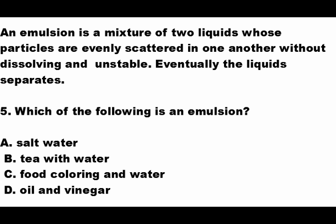Number five is about emulsion. An emulsion is a mixture of two liquids whose particles are evenly scattered in one another without dissolving. It is unstable, and eventually the liquids will separate. Which of the following is an emulsion? Is it A) salt water, B) tea with water, C) food coloring and water, or D) oil and vinegar?